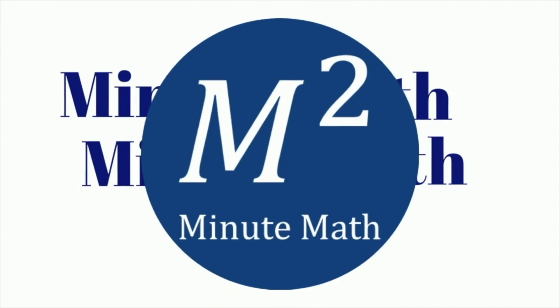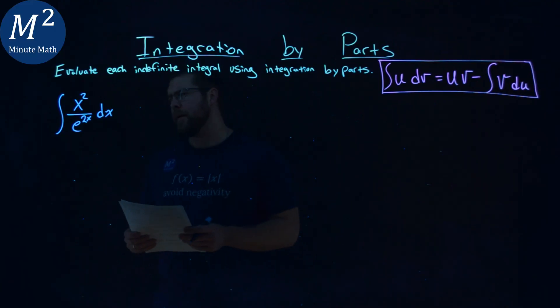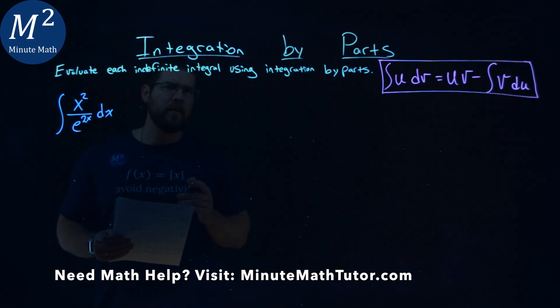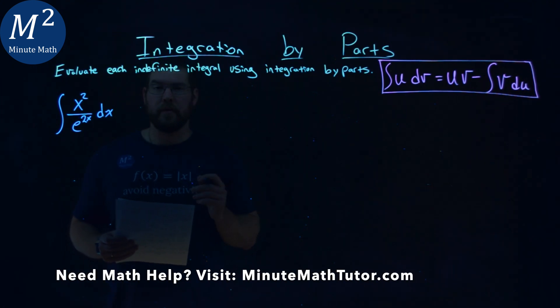We're given this problem right here, the integral of x squared over e to the 2x dx, and we have to evaluate this integral using integration by parts.